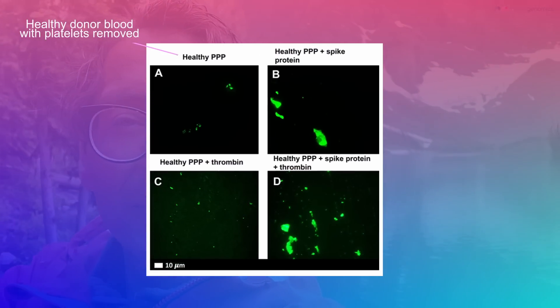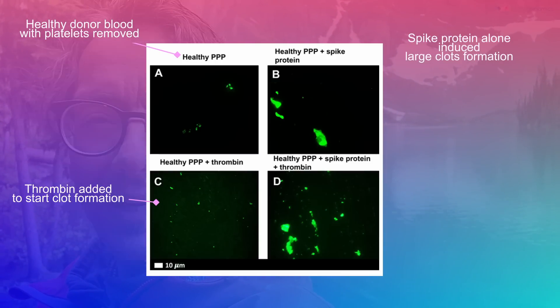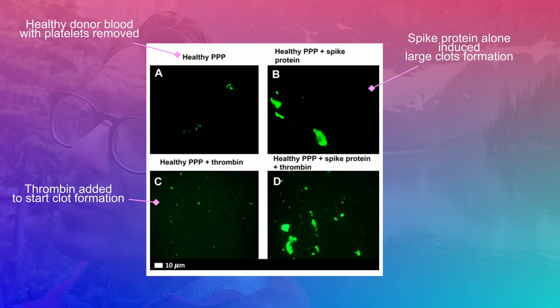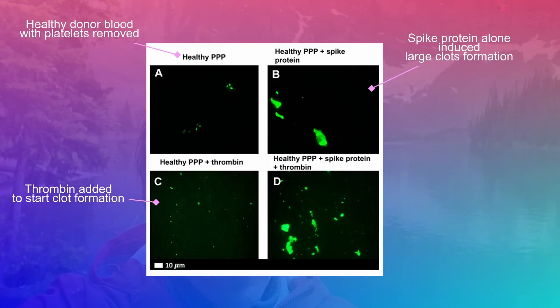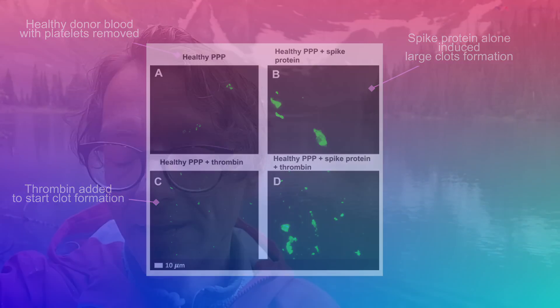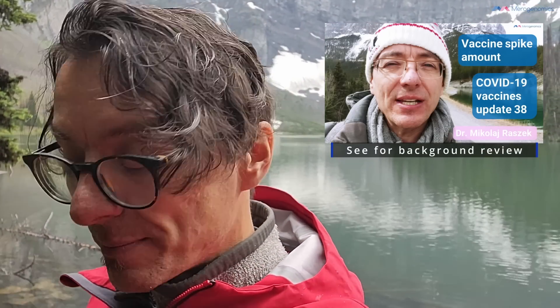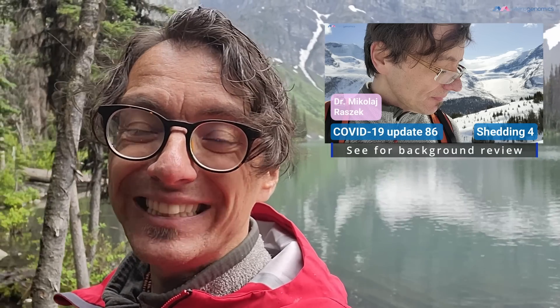It didn't take much spike protein — they used only one nanogram per milliliter. That's about 10 times higher than what is typically found post-infection or post-vaccination, which is around 100 picograms of spike protein per milliliter of blood. However, as I mentioned in the series on the science of shedding, higher levels of spike protein — up to one nanogram per milliliter — have also been observed in the blood. So this is definitely within potential physiological levels, and these authors are showing that such levels of spike protein alone can induce formation of these abnormal clots.